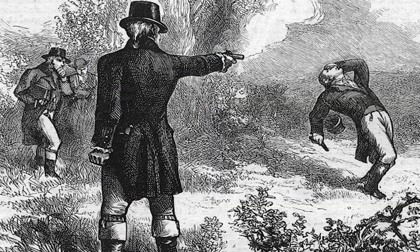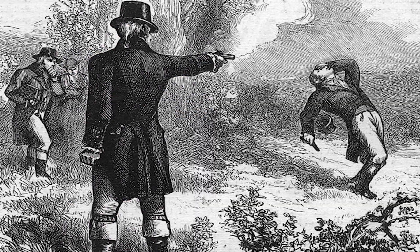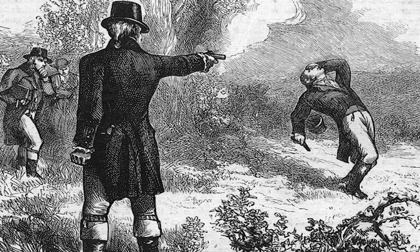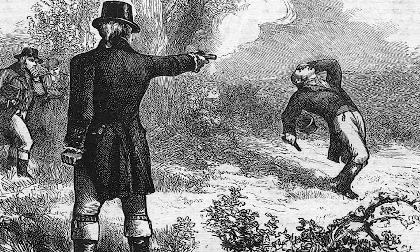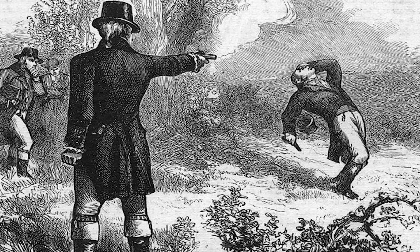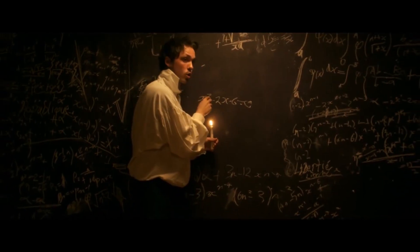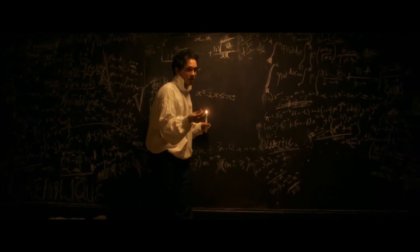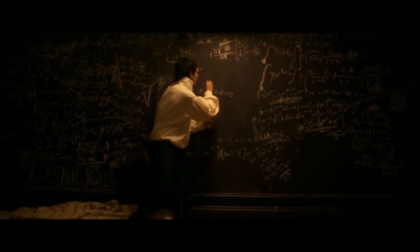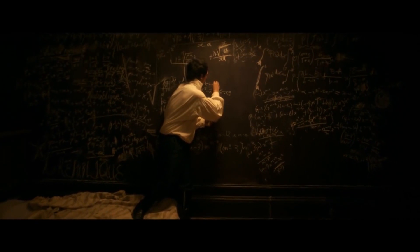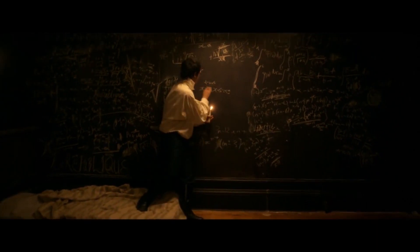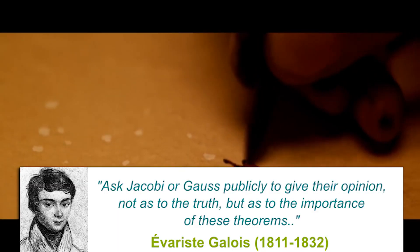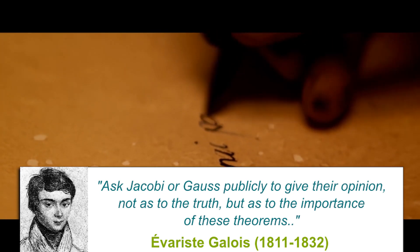He died when he was only 20 in a duel, which might be a result of a romantic entanglement or political movement in France. The night before that deadly duel, Galois had written his great idea of group theory for the last time, with a wish of asking for the opinions of Jacobi or Gauss to the importance of his theorems.